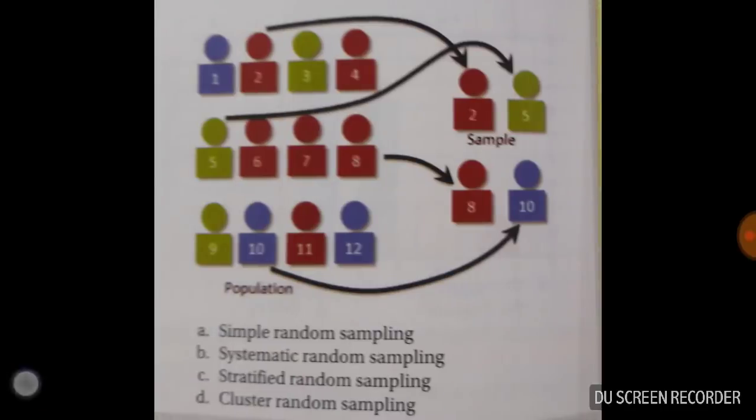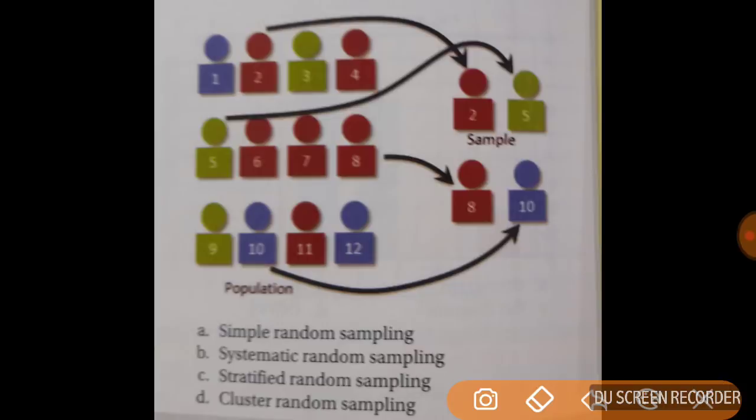Now tell me which one is this. So here you can see it is a small homogeneous population. See 1, 2, 3, 4, 5, 6, 7, 8, 9, 10, 11, 12. Small and homogeneous. And how you are taking? You are taking 2 here, then 5 here, then 10 here. It's just random. So it is simple random sampling.